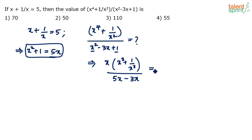I think we are close to getting the answer. We have x into x cube plus 1 by x cube divided by 2x. So x and x gets cancelled. Now all we need to do is find out what is x cube plus 1 by x cube. Get that value, and once you get that value, divide by 2 to get the final answer.